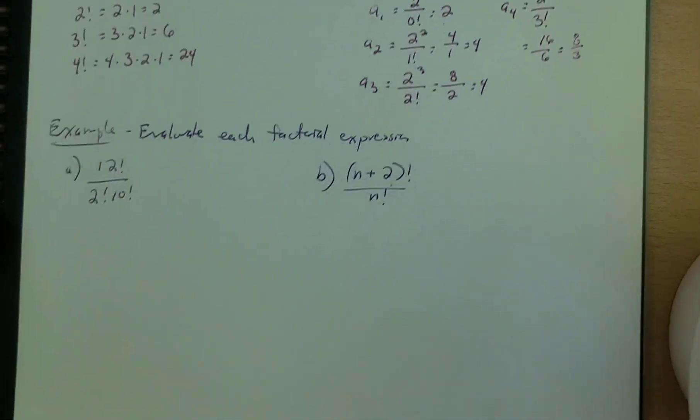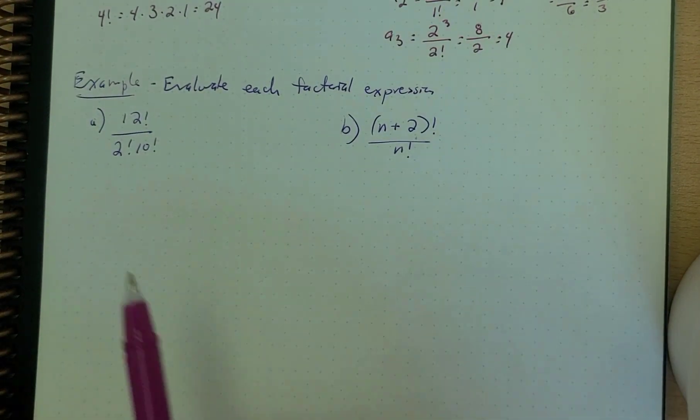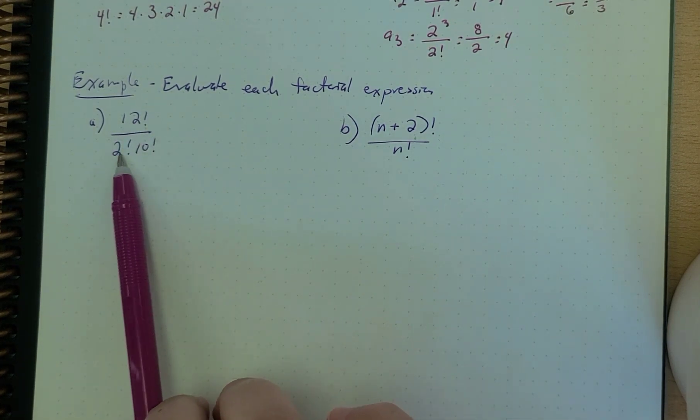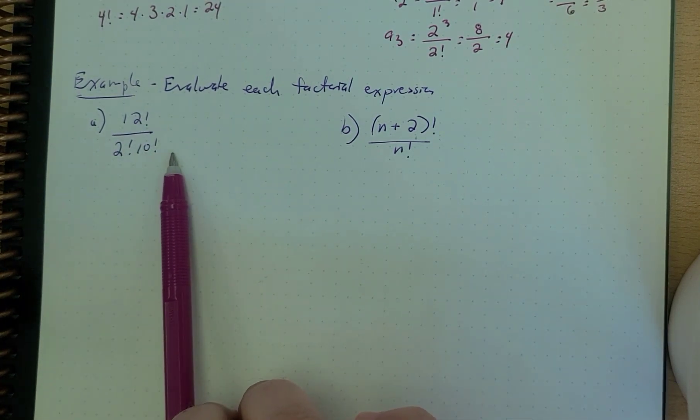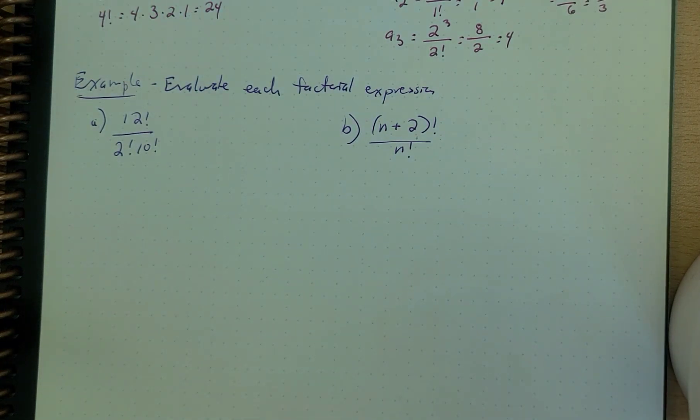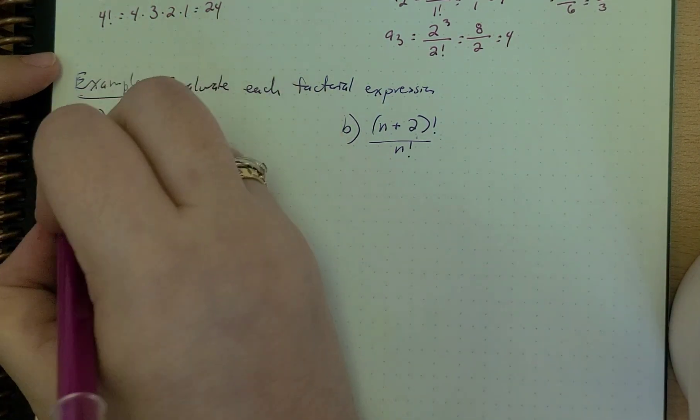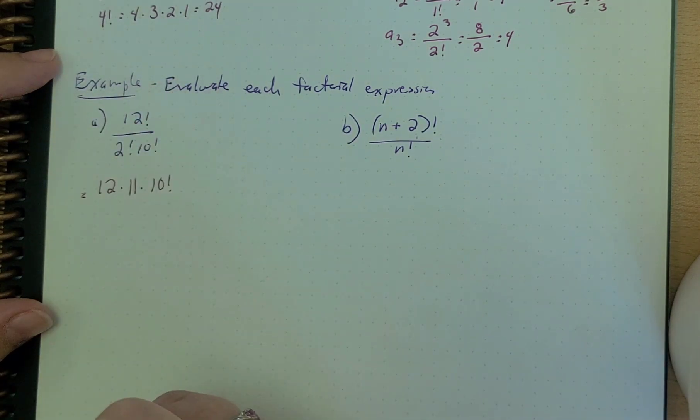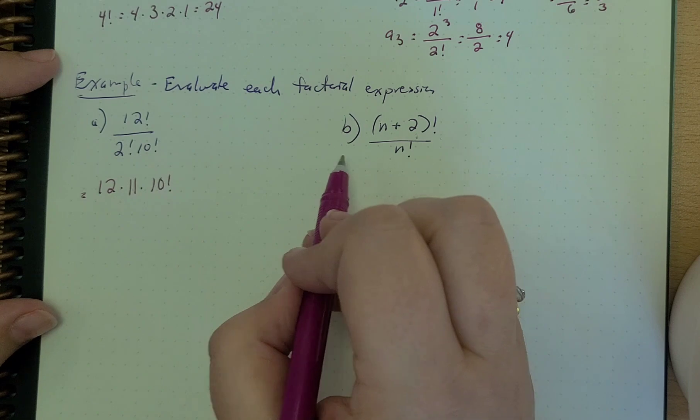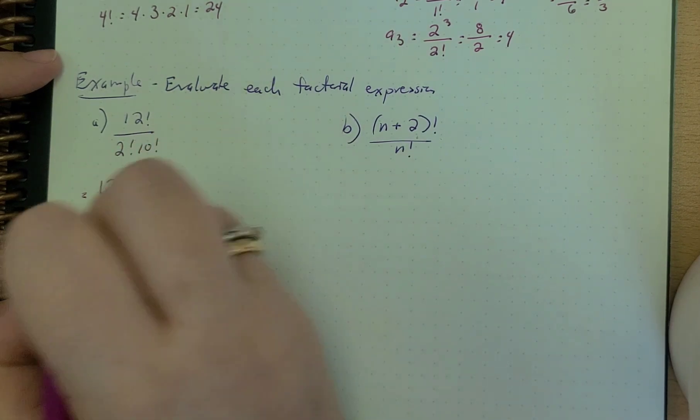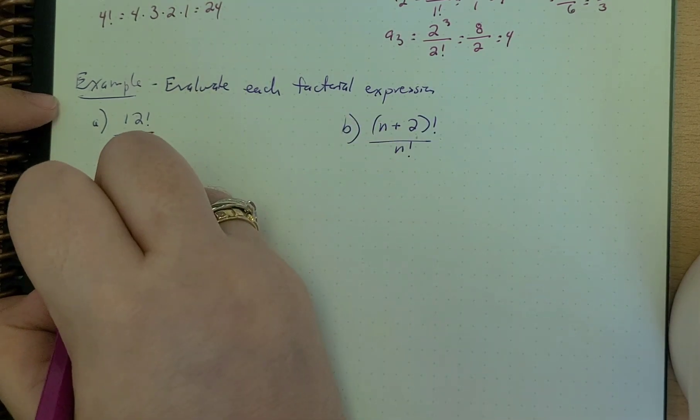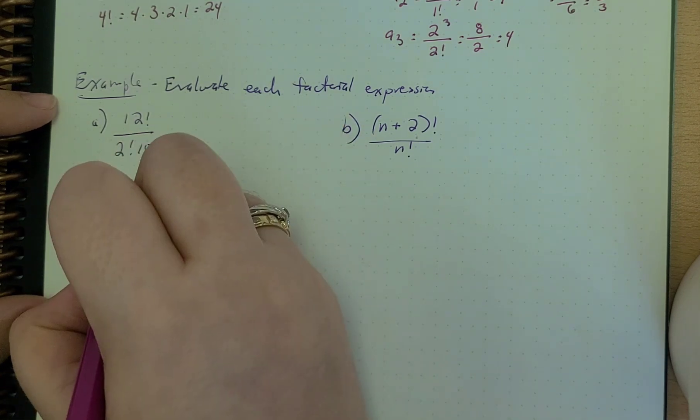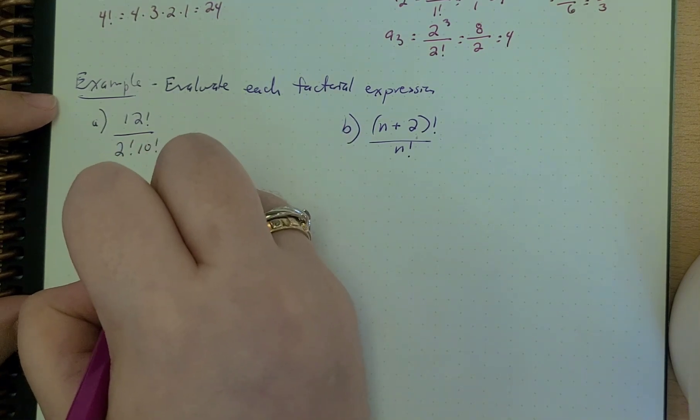We can also evaluate factorial expressions, and this is kind of fun to do. So here we have 12 factorial over 2 factorial times 10 factorial. Well, we can actually think of this as, we can rewrite it as 12 times 11 times 10 factorial, right? We don't have to expand this all the way out, because you'll see here. So then we have 2 times 1, which is kind of pointless, but I'll leave it there anyways, times 10 factorial.